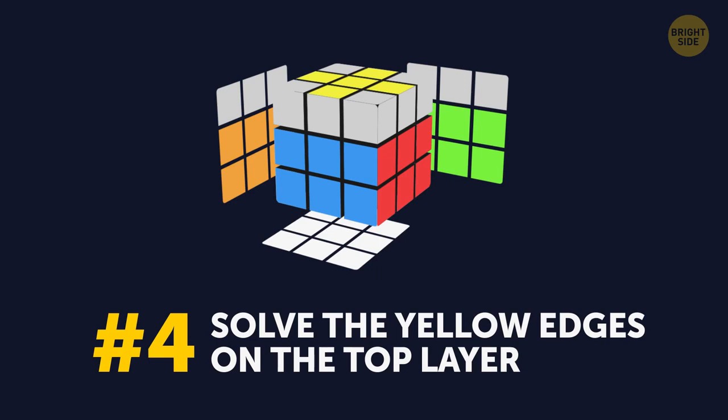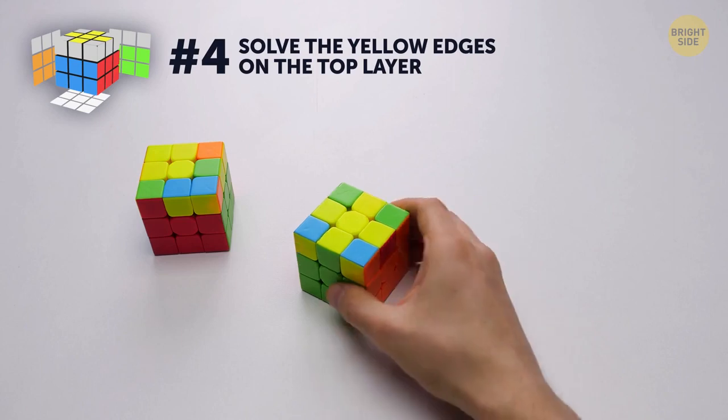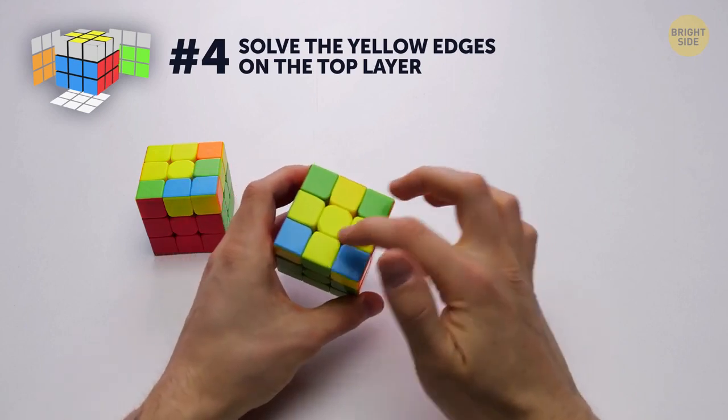Number 4. Solve the yellow line. Use the yellow edges on the top layer. First you put together a yellow cross on the yellow side of the cube.